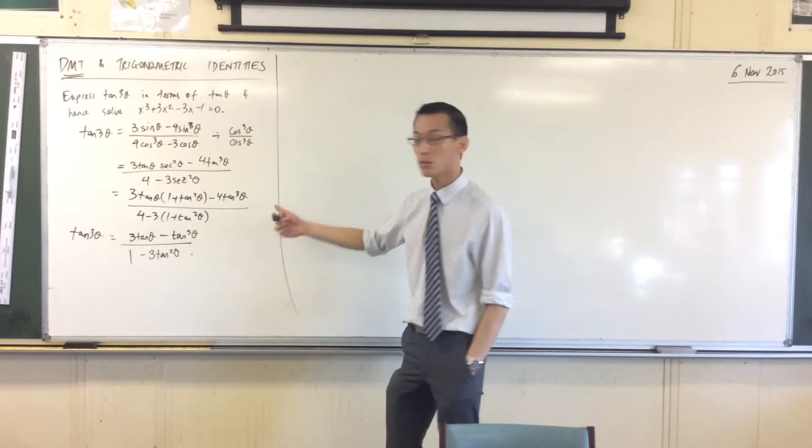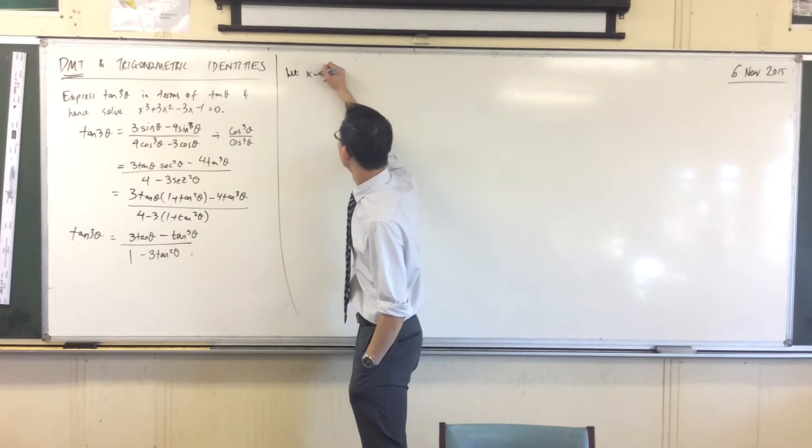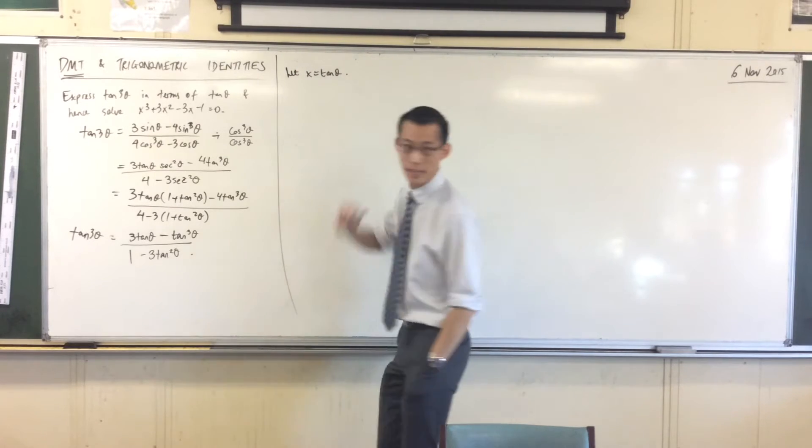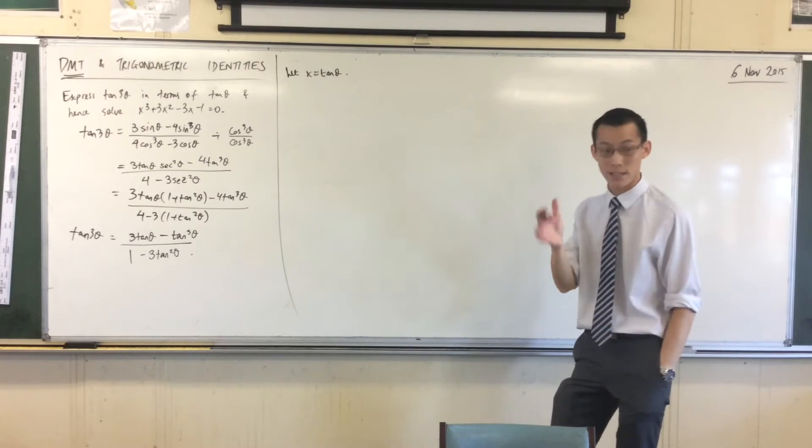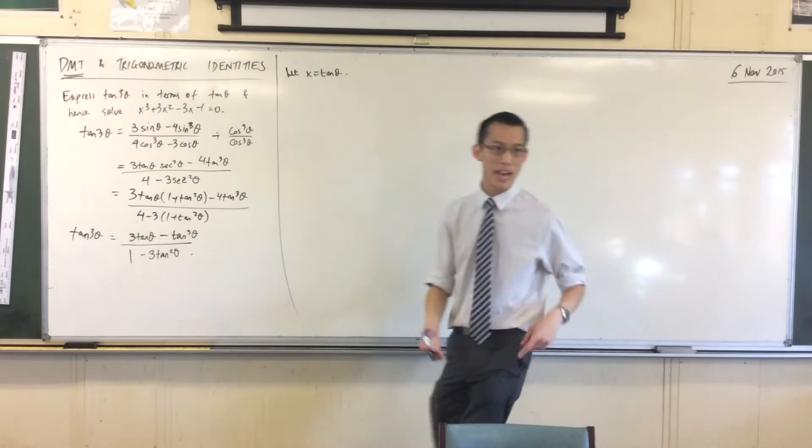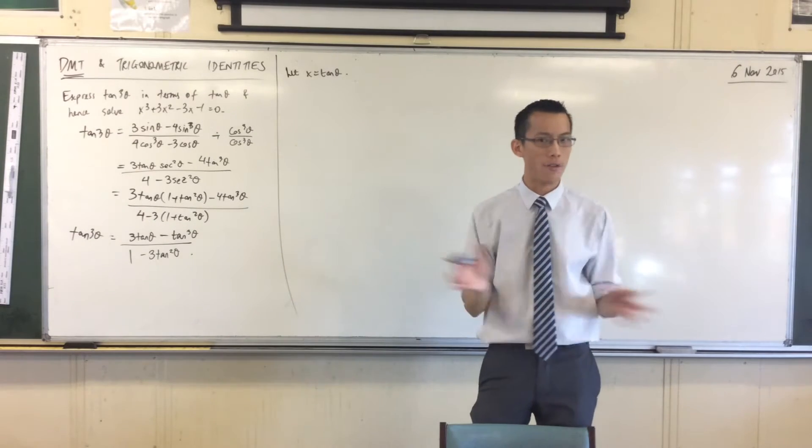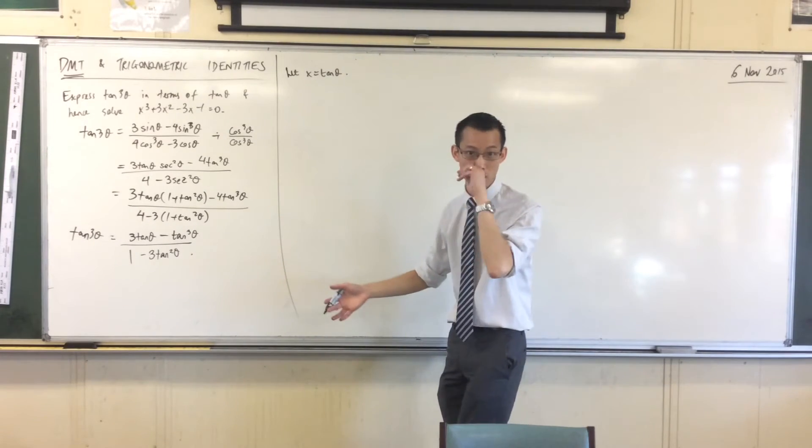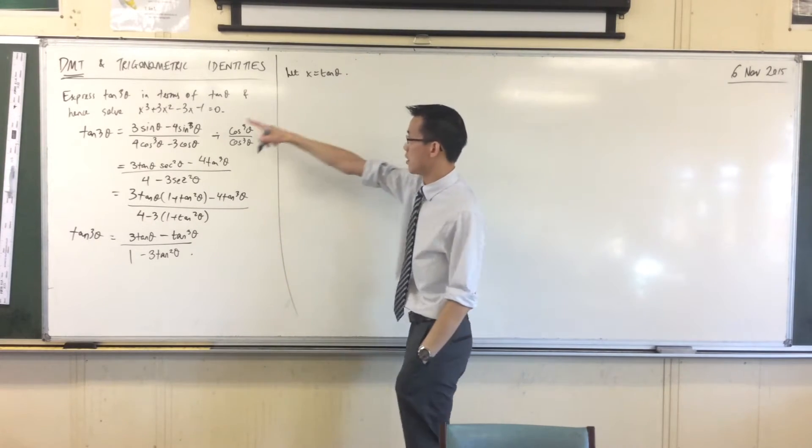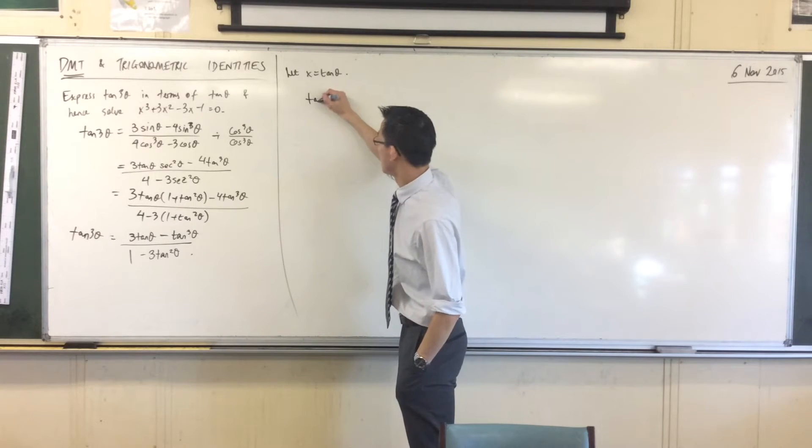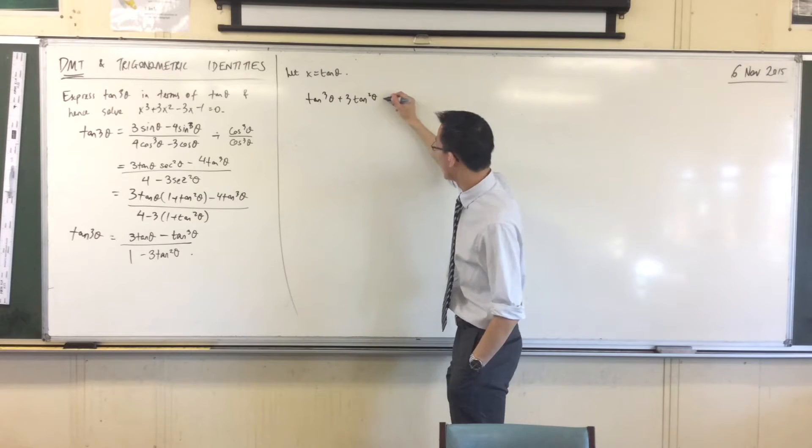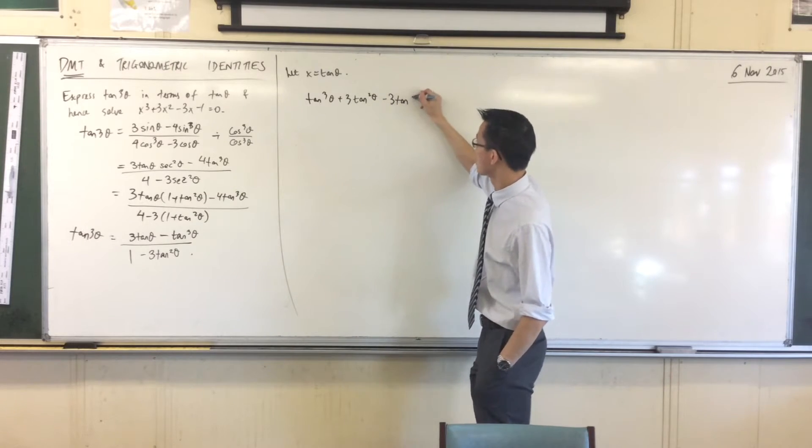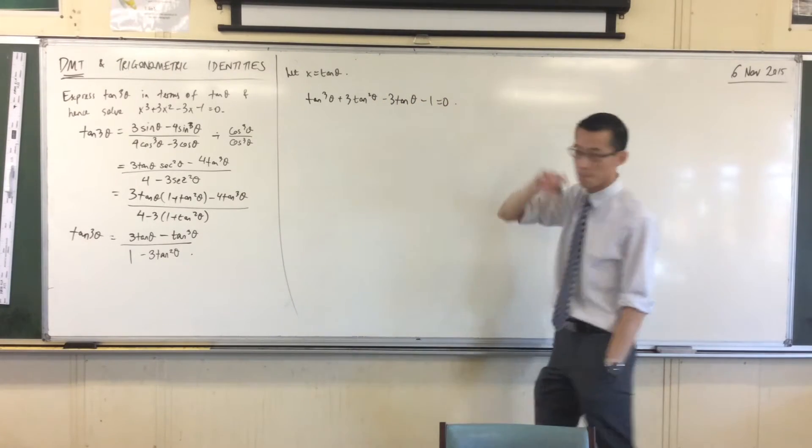I'm going to let x equal tan theta, that's my first line. By the way, this is a classic example of what does get done in extension 2, because now you have this whole world of more challenging identities now open to you. So I'm going to just do my straight substitution. This is tan cubed plus three tan squared minus three tan minus one.